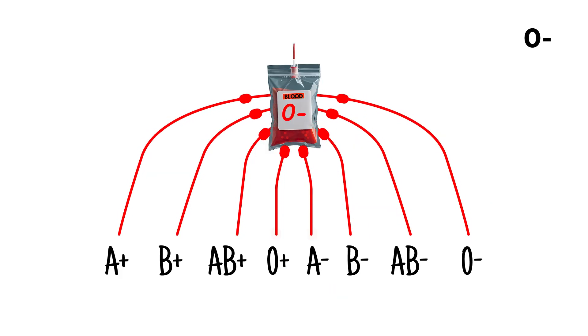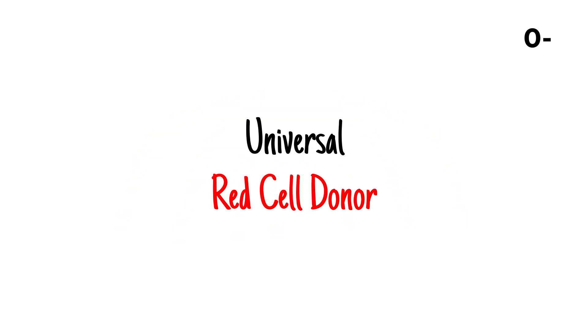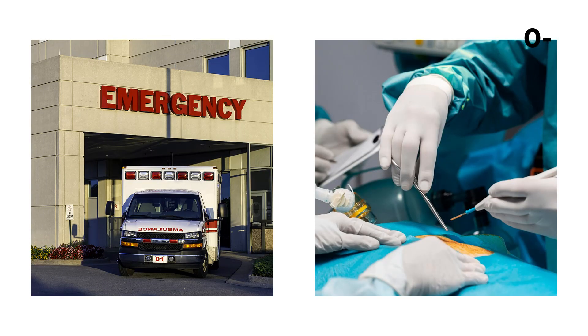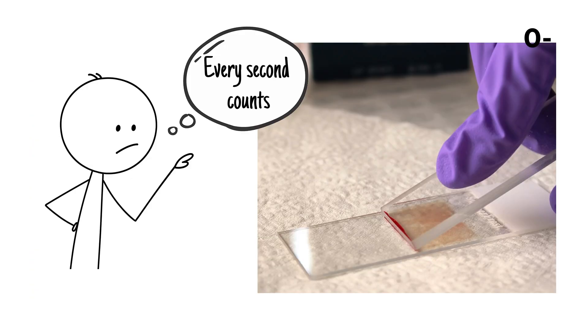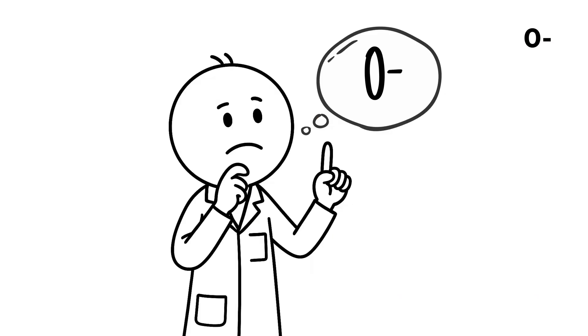Regardless of their blood group, it earns the title of the universal red cell donor. In emergency wards and disaster zones, where every second counts and blood typing is impossible, O negative is the first and often life-saving choice.